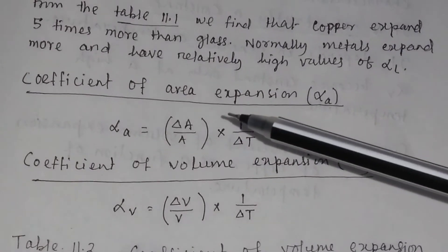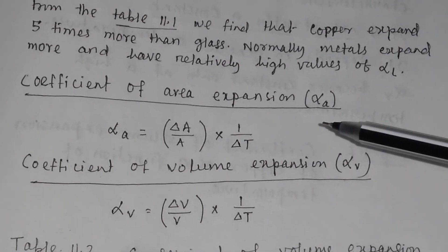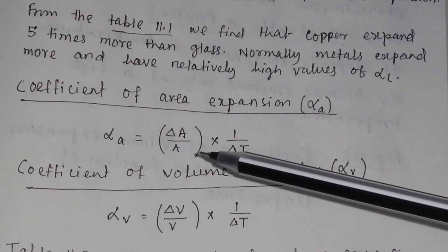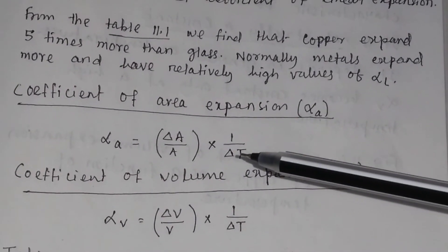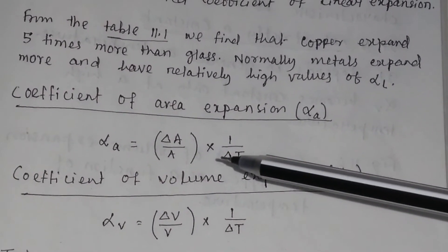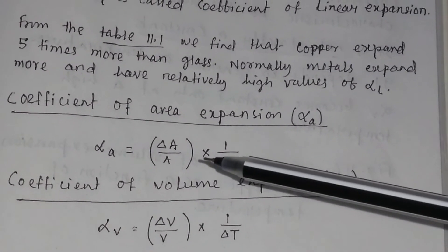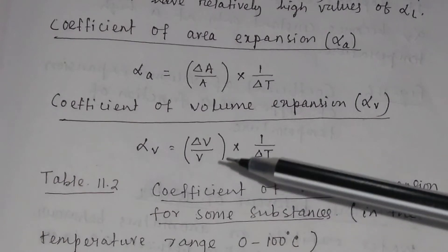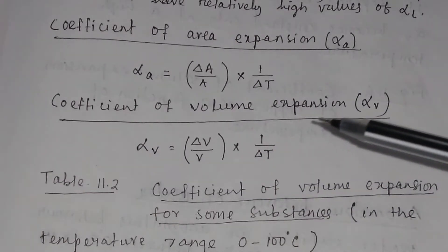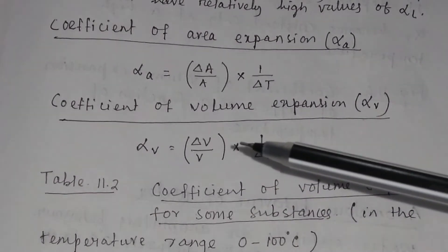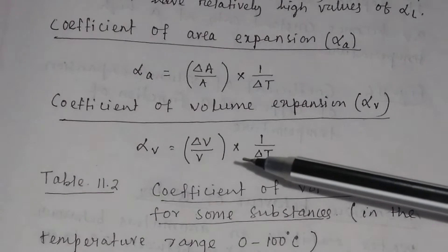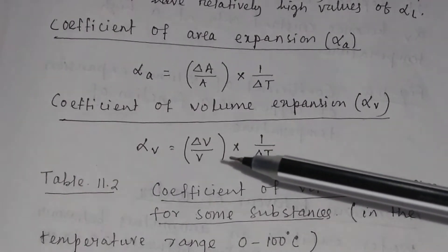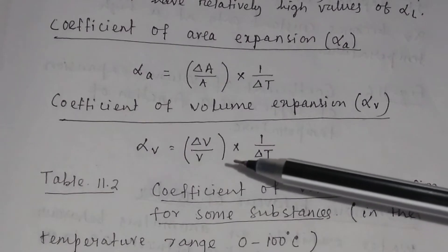Similarly, you can define the coefficient of area expansion alpha A: alpha A is equal to delta A divided by A, multiplied by 1 divided by delta T, where delta A by A is the fractional change in area. Similarly, the coefficient of volume expansion alpha V is equal to delta V divided by V, multiplied by 1 divided by delta T, where delta V by V is the fractional change in volume.